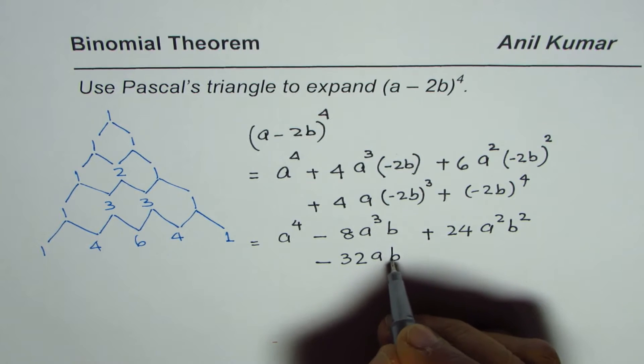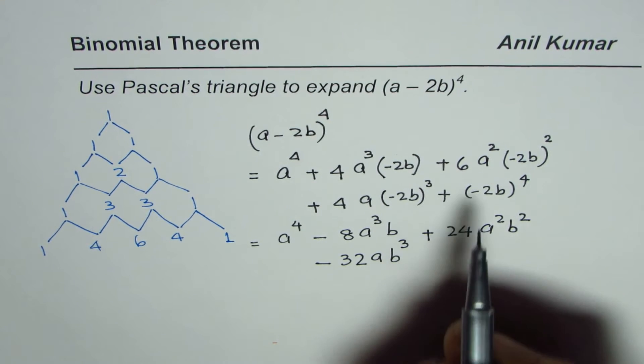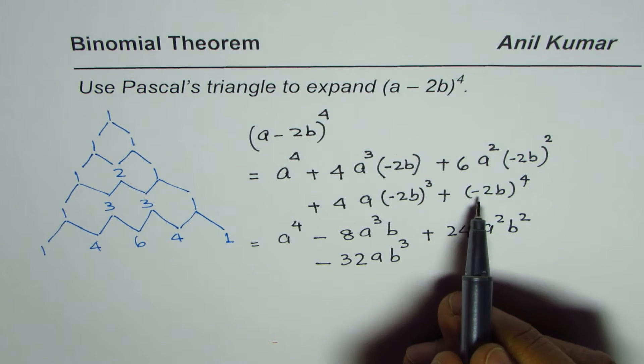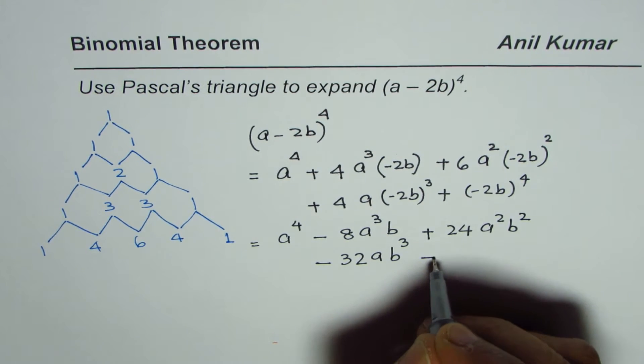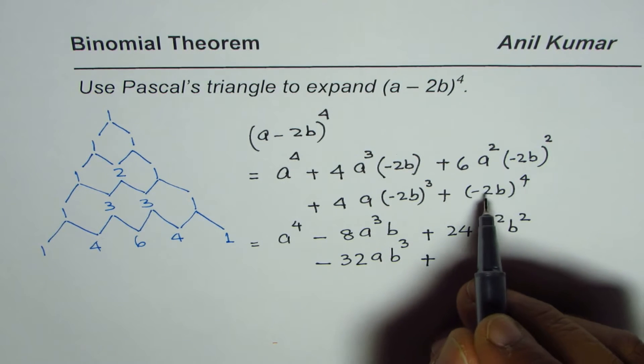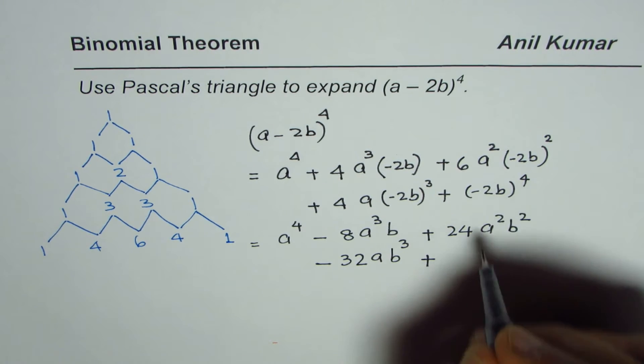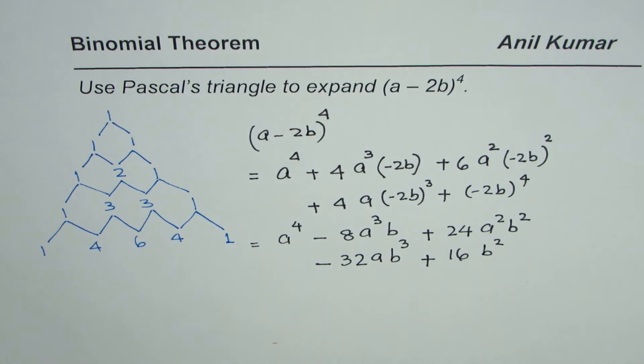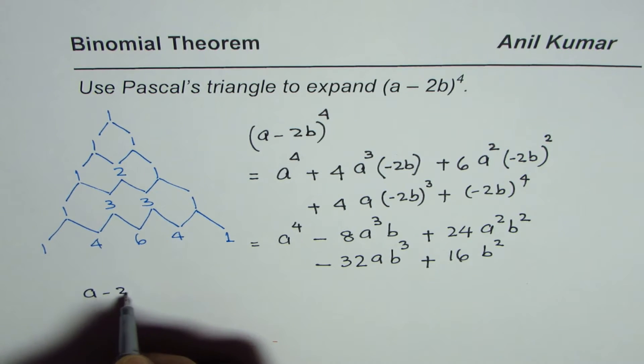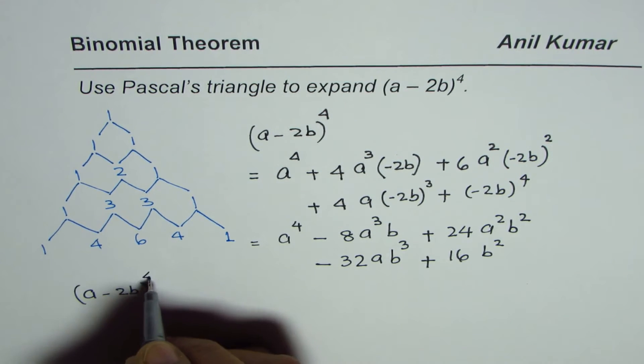to the power of 3. In this case, we have (−2b)^4, which becomes positive. (−2)^4 is 16, so 16b^4. That is how you expand it. We can write (a - 2b)^4